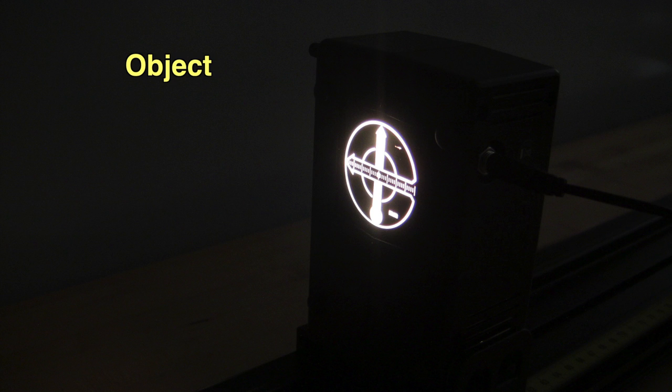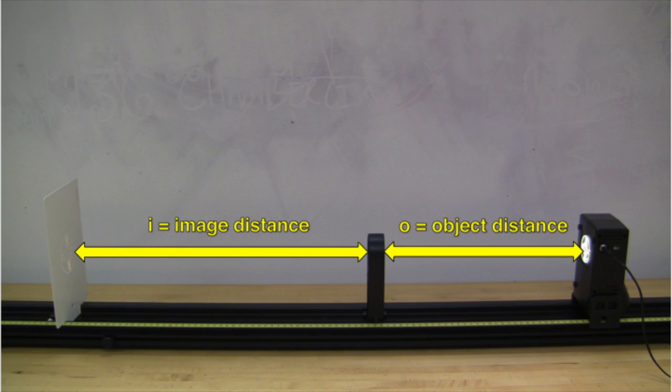You will use a light source in the shape of crosshairs as your object. The ticks on the crosshairs are 1mm apart. By using the ruler attached to the optics bench, you will be able to measure the image distance and the object distance.